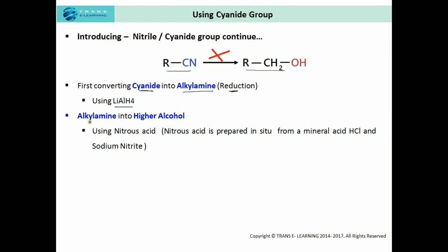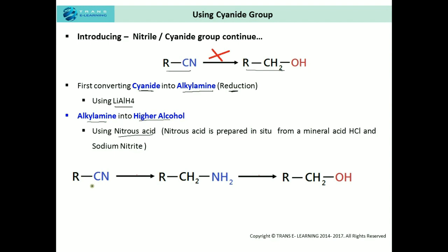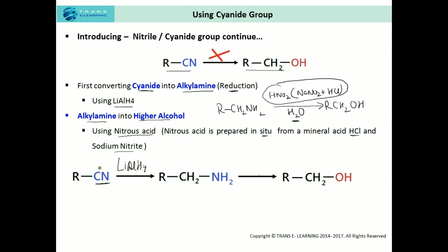We convert the cyanide group or alkyl nitrile into an aliphatic amine using lithium aluminum hydride. The carbon atom of the cyanide group is converted into a methyl group, introducing one more carbon atom into the carbon chain. As a result, the product has one more carbon atom compared to the parent compound.